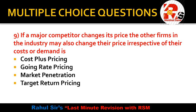Question number 9: If a major competitor changes its price, the other firms in the industry also change their price irrespective of their cost or demand. There are many pricing methods: cost-plus pricing, target return pricing, market penetration, skimming pricing, and break-even analysis. When a major competitor changes their price and other firms follow the same price change regardless of their own cost or demand analysis, that pricing technique is called going rate pricing.